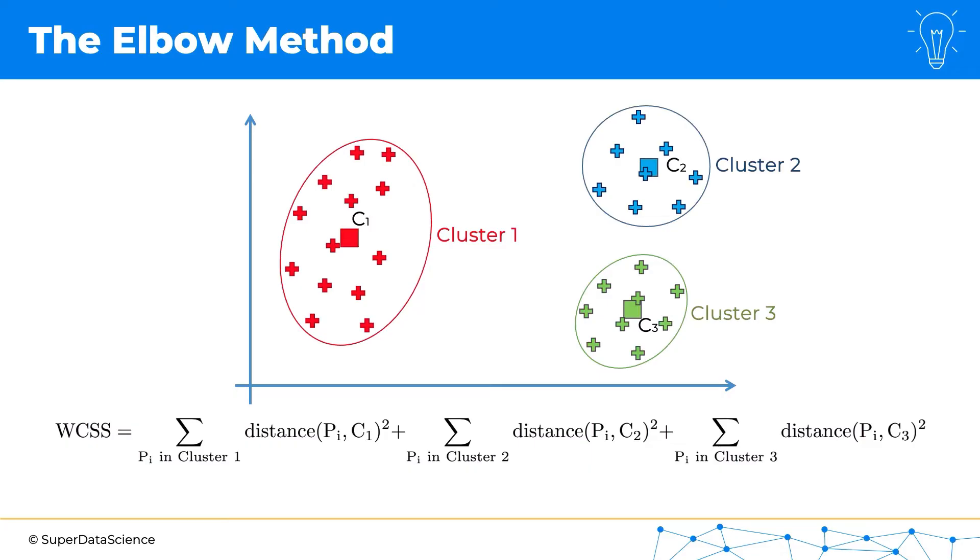And same thing for three clusters. So two things to point out here. First one is, as you can see, to calculate all these different within-cluster sum of squares for the different options, we actually need the clusters to already exist. So every time we have to first run the k-means clustering algorithm and then we calculate the WCSS.